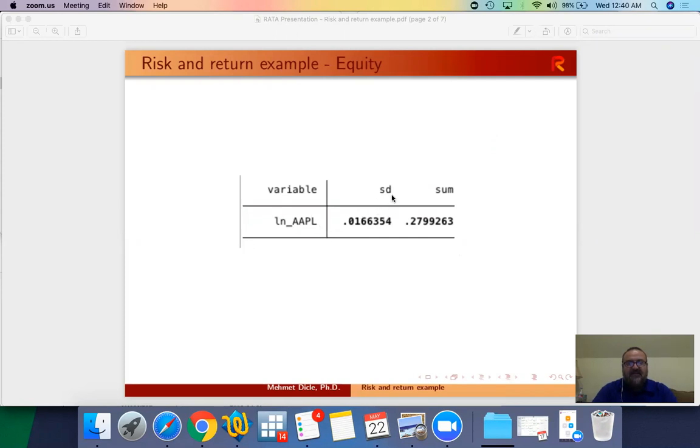Apple standard deviation simply means the price deviations from its mean. We take an average price of Apple since January 1st of 2019 of daily prices, and then what is the average deviation around that average price. That's your standard deviation. So Apple's standard deviation daily return is 0.016, and total return is 27.99 percent. For this amount of risk, Apple provided us with this much return.